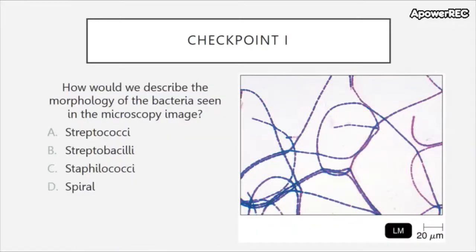Checkpoint one: how would we describe the morphology of the bacteria seen in the microscopy image? You may need to zoom in or use a laptop or desktop to view the bacterium properly. Is it A) streptococci, B) streptobacilli, C) staphylococci, or D) spiral?